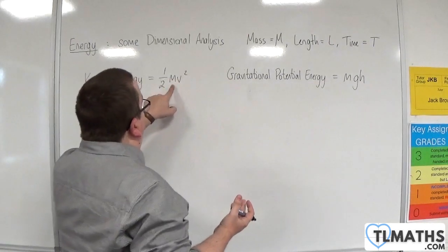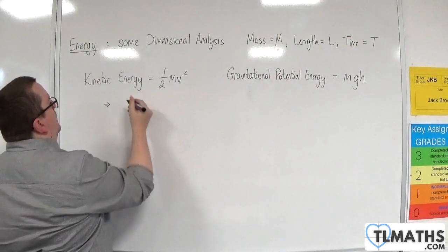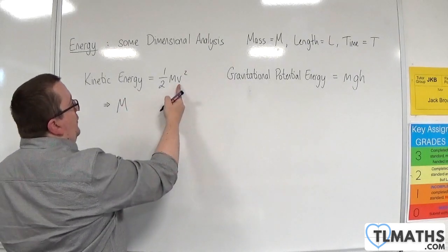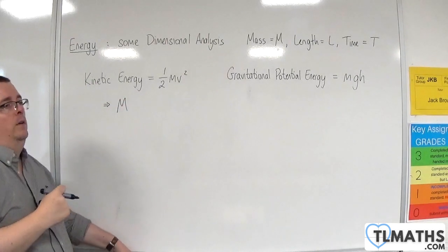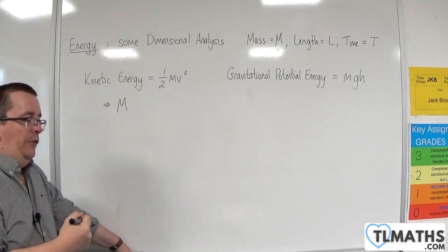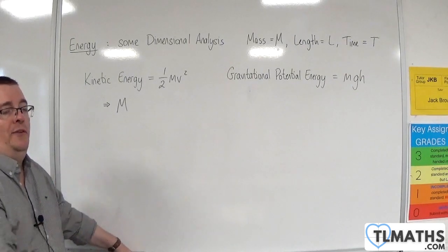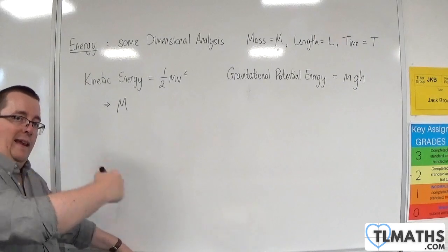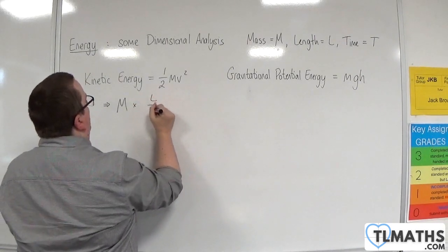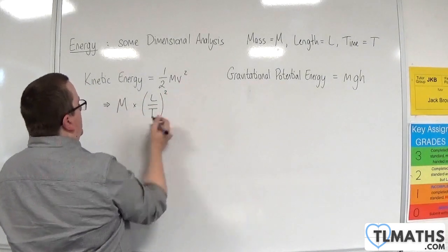The mass that we have there, we can replace with capital M. And then you've got velocity. Now, velocity is a length over a time. So meters per second is a length over a time. So we have length over time, and that's being squared.